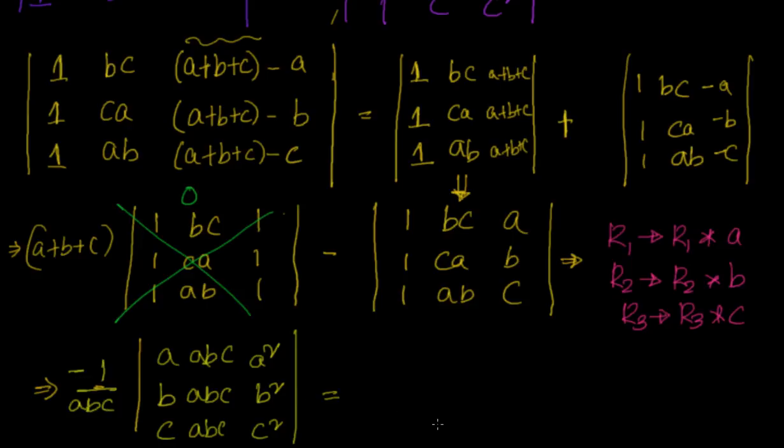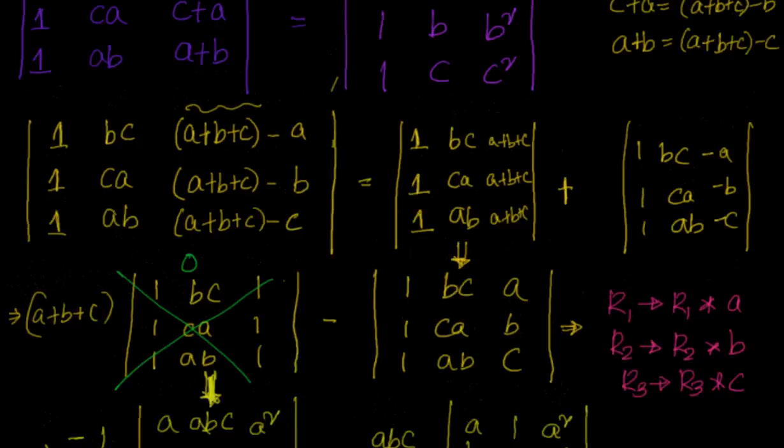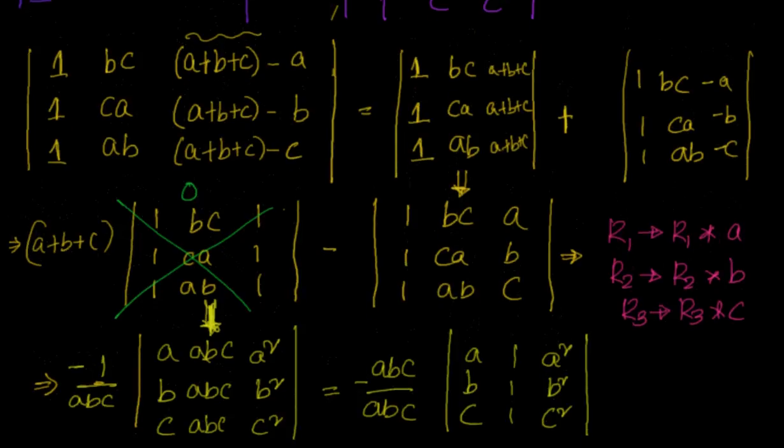Now when you multiplied you should also divide so that the value is not changed. Now can I take this ABC common from the second column? It becomes minus ABC by ABC, A, B, C, 1,1,1, A², B², C².